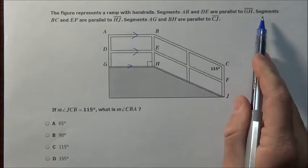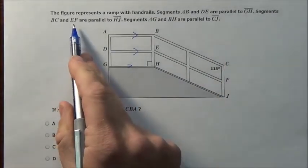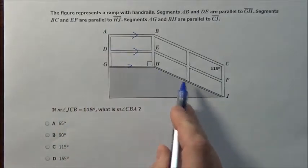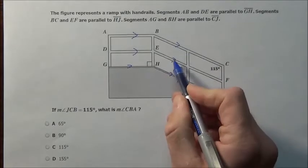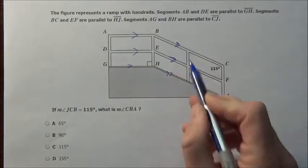Segments BC and EF are parallel to HJ. So these going down here are all parallel to one another. We should make two arrows, but that's okay.